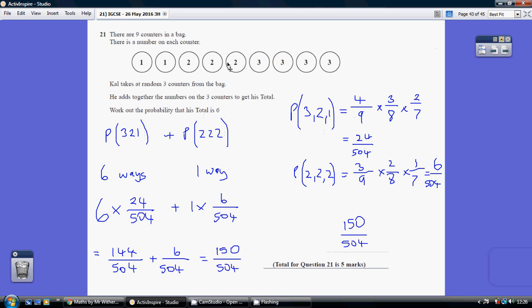It's 3 out of 9, then 2 out of 8, then 1 out of 7, which is 6 over 504. And as I said, there's only one way of doing that.